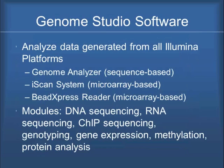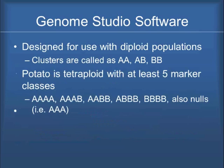As potato breeders we really want to be able to use tetraploid populations, and so the question is how do the SNPs behave in tetraploid material? We're using the Illumina platform and Genome Studio software with the iScan system — it's microarray based — but there's also a bead express system and other platforms within Illumina that can be used where you can use a smaller number of SNPs, ones that are only important to you.